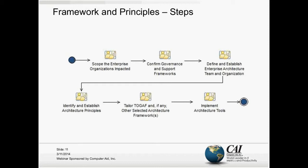We then need to establish and define the enterprise architecture team and organization — who the members are, who they report to, where they work, and what their responsibilities and roles are. There are many qualifiers used when describing architects: enterprise architects, business architects, data architects, information architects, application architects, technology architects, and so on. The goal is to pull all those different roles into a common practice based on generally accepted best practices. Then we establish architecture principles as the foundation for our governance framework, tailor the selected architecture framework including TOGAF, and ultimately implement the architecture tools.